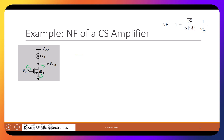Now if I draw the small signal model — you need to practice this. We have VG and the dependent current source GM·VGS, and I also need to add a resistor here. This is the transistor model. This is the gate, this is the drain, this is the source.